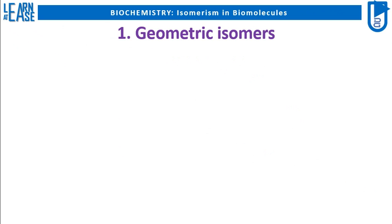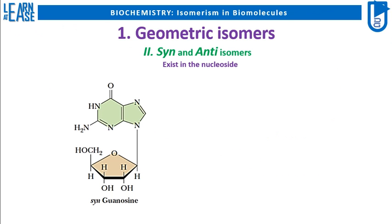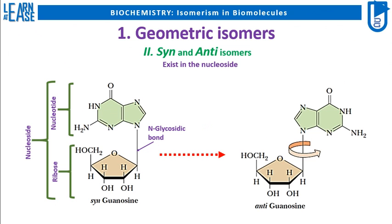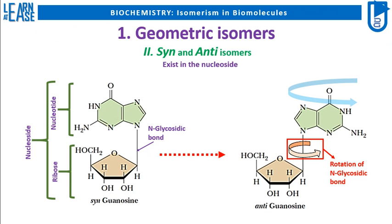Another type of geometric isomers is syn and anti-isomers. Such isomerism is found in nucleosides. The image on the left shows the structure of guanosine, which is a nucleoside. A single molecule of nucleoside possesses a ribose sugar forming an N-glycosidic bond with the nucleotide guanine. This heterodimer containing ribose sugar and nucleotide is called a nucleoside. Guanosine represented in the image is the syn isomer, while the image on the right shows guanosine in anti-form. Syn and anti-forms of nucleoside occur by rotation of the nucleotide via the N-glycosidic bond. It should be remembered that all nucleosides can exist in syn and anti-form.